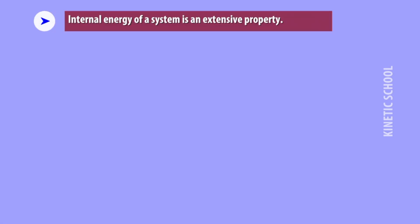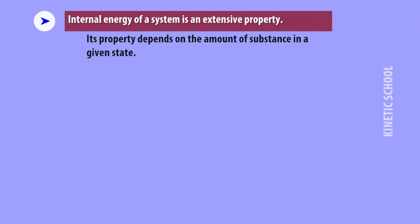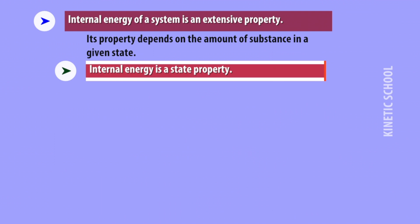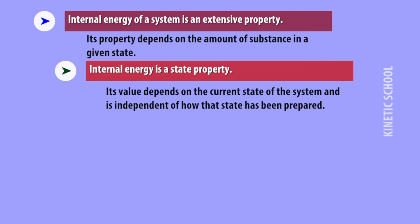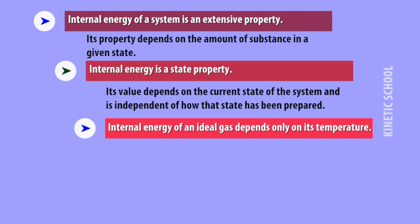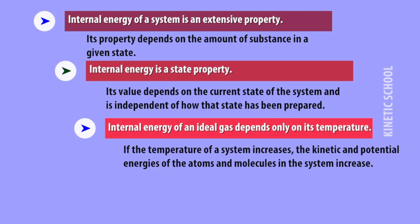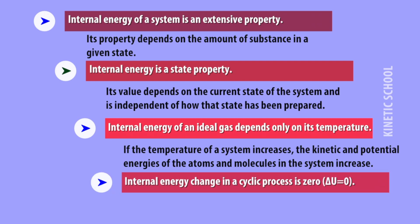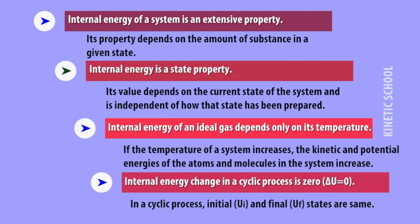The characteristics of internal energy are: first, it is an extensive property, so it depends on the amount of substance in a given state. Second, it is a state property, meaning its value depends on the current state and is independent of how that state was prepared. Third, the internal energy of an ideal gas depends only on its temperature — if temperature increases, kinetic and potential energies of atoms and molecules increase. Finally, the change in internal energy in a cyclic process is zero, since the initial and final states are the same.